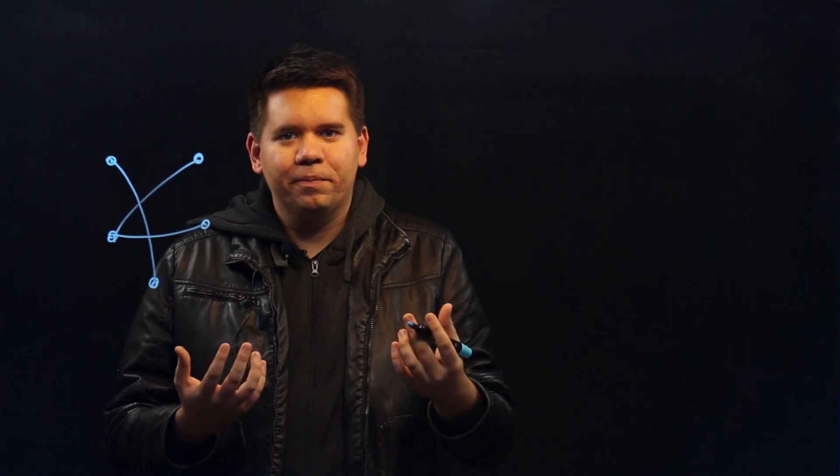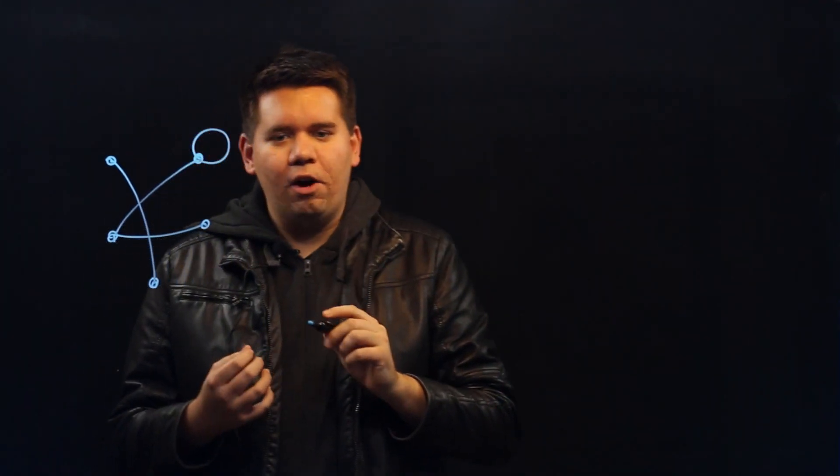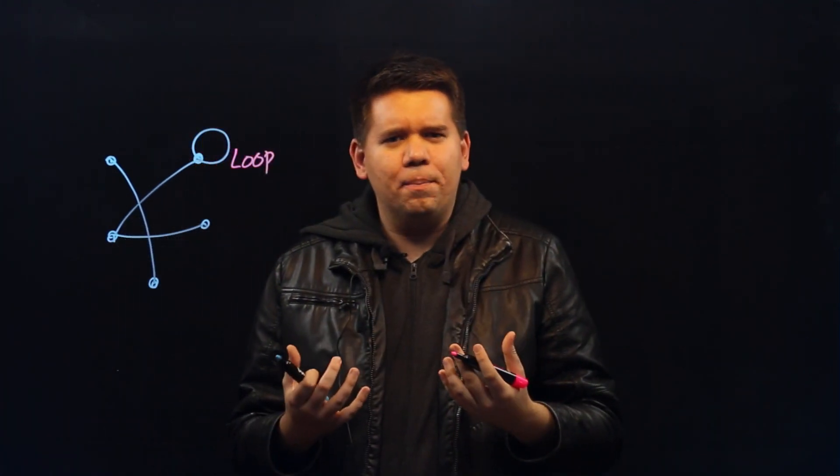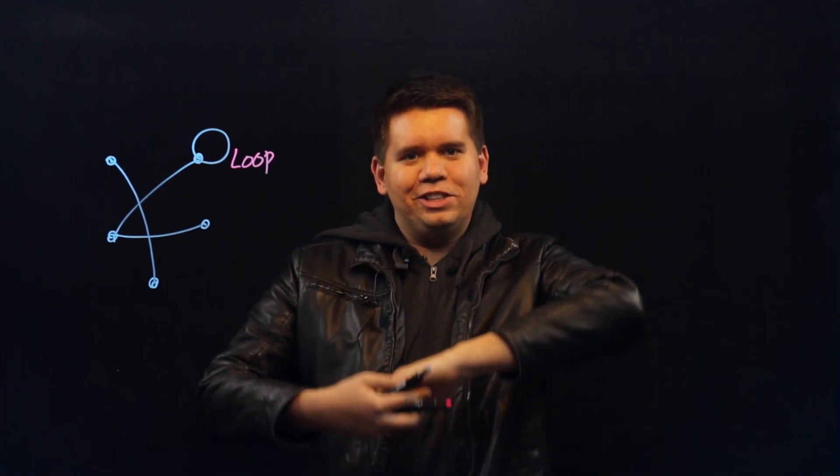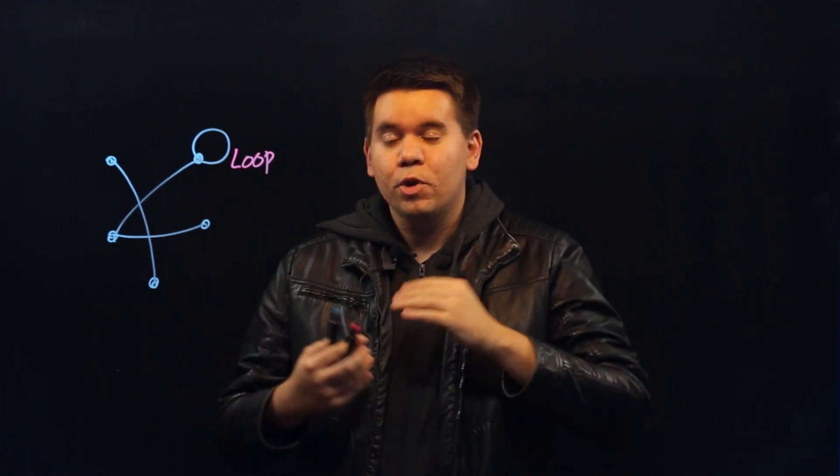Now, in addition to having people shaking hands and edges between them, you might get some curious behavior. For instance, you might have a vertex that connects to itself with an edge. We call that a loop. In our handshake example, you might think of this as someone shaking his own hand.